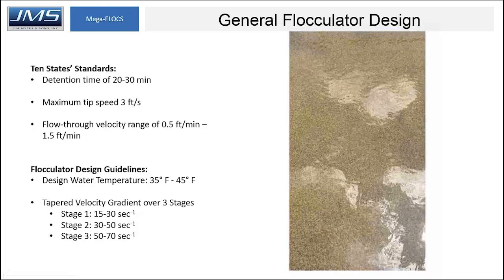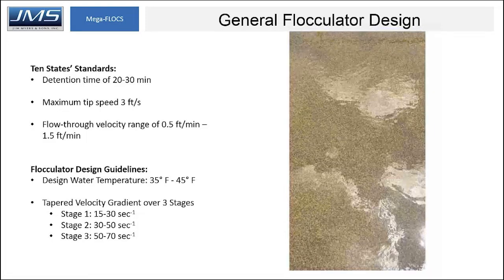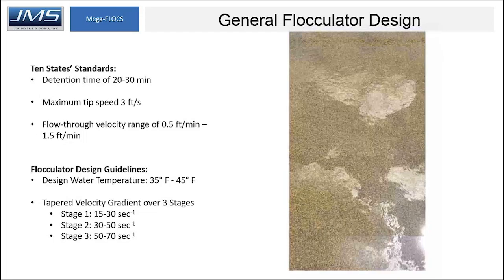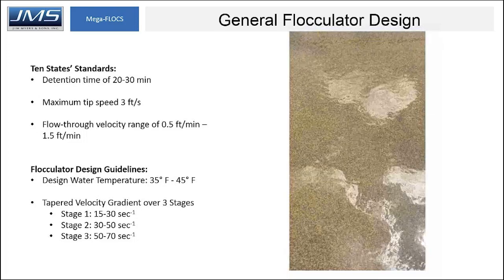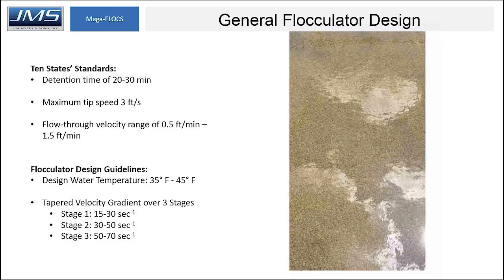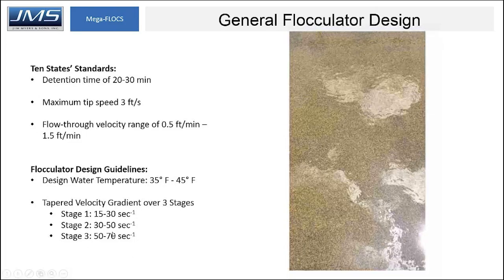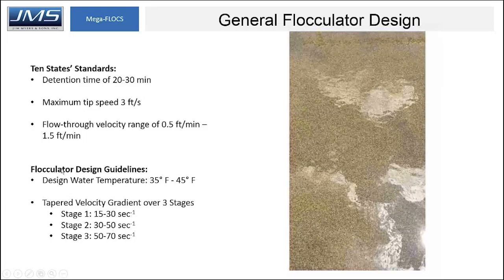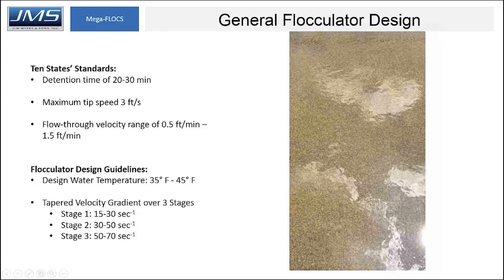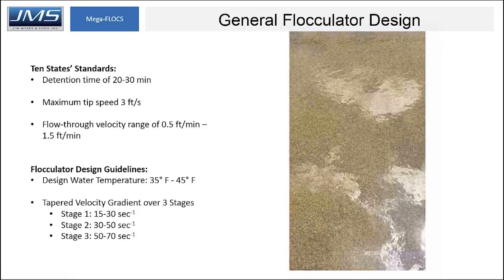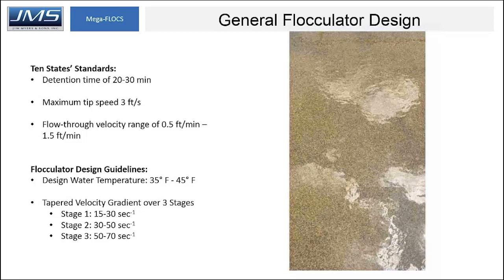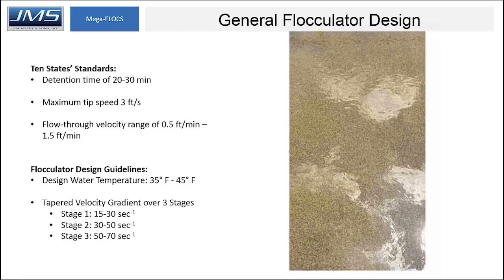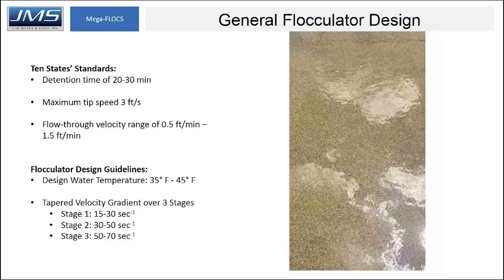This takes pressure off of the downstream equipment to perform. This picture was taken in a flocculator basin using horizontal paddle wheel flocculators. Some factors that could affect gradient selection are the type of subsequent downstream equipment, the raw water influent, and local conditions and chemicals that are added during flocculation.